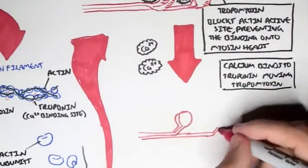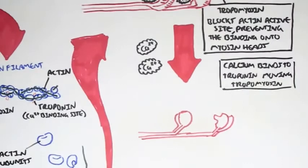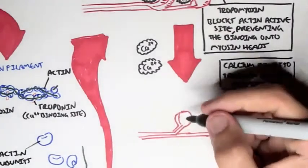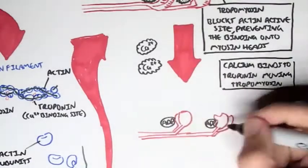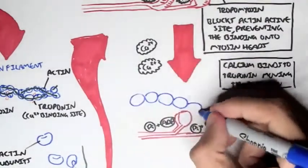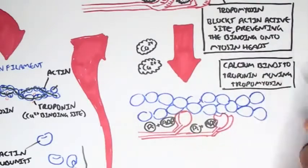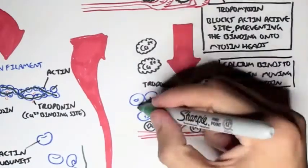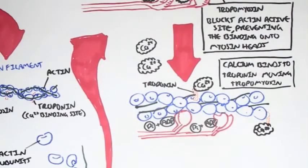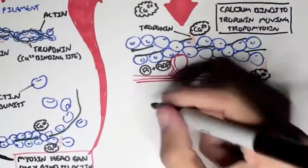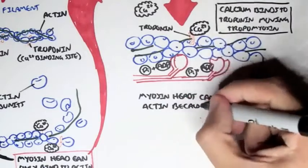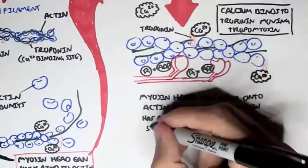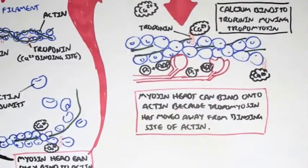Moving tropomyosin out of the actin and myosin connection. So here we have the myosin heads again — ATP has been used and it now has ADP, so it has energy. Here we have the actin, the thin filaments with the actin subunits. Calcium has bound onto the troponin, and this has caused tropomyosin to move away from the myosin binding site on the actin subunits. This allows myosin heads to attach to the actin subunits.